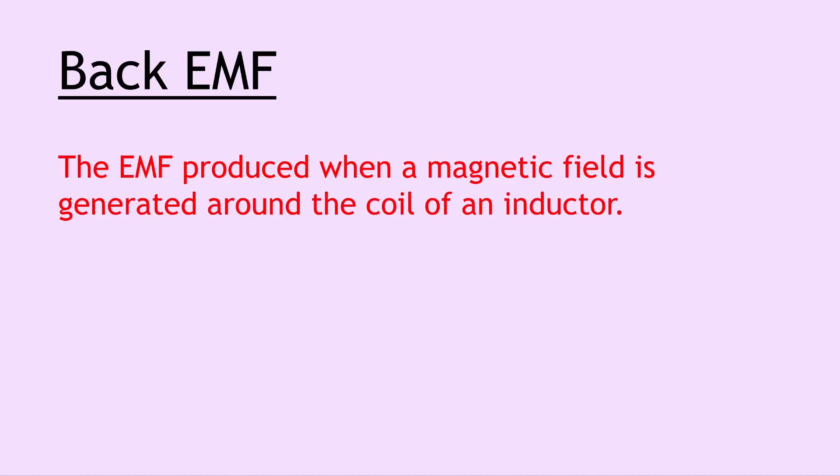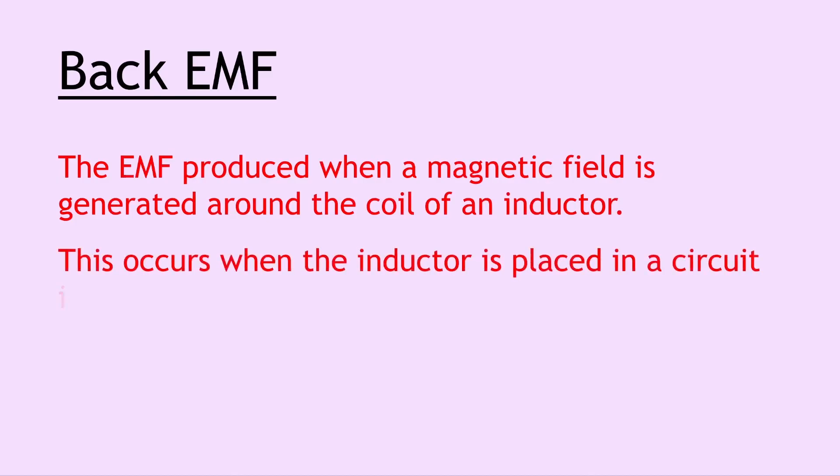Next we have something related to Lenz's law which is called back EMF, and this is the EMF produced when a magnetic field is generated around the coil of an inductor. This occurs when the inductor is placed in a circuit in which the current is changing. For example, if you have an inductor and a resistor in a circuit with an open switch and then you close the switch, the current will immediately start to change, at which point a back EMF will be produced. A back EMF would then also be produced when you open the switch.